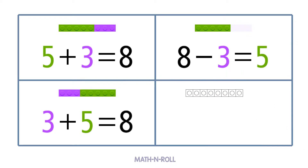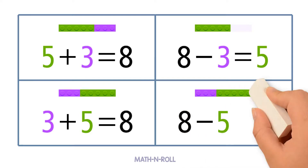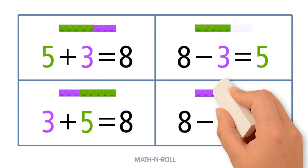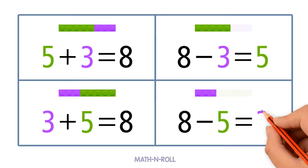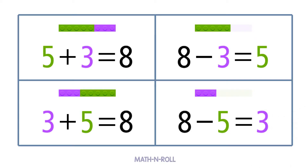Now we start from 8 and we take away 5 green pieces. How many do we have left? 3. So 8 minus 5 equals 3. We have 4 related facts, making a fact family. We have 2 addition facts and 2 subtraction facts. Related facts use 3 numbers, but in different order.